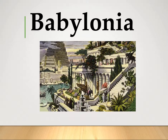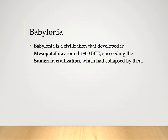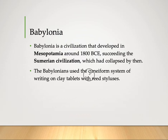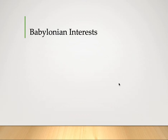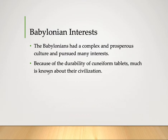Let's move on to Babylonia. Babylonia is a civilization that developed in Mesopotamia around 1800 BCE, succeeding the Sumerian civilization which had collapsed by then. The Babylonians used the cuneiform system of writing on clay tablets with reed styluses, and also used this system for their numerical notation. Because of the durability of the cuneiform tablets, much is known about their civilization.